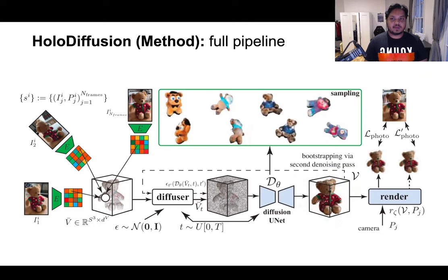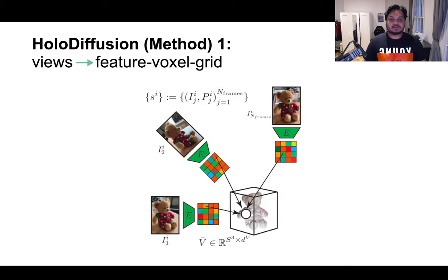Here's the full pipeline of the HoloDiffusion training algorithm. Let's go through this one step at a time. The first step of the HoloDiffusion training setup involves constructing an approximate 3D feature voxel grid using the source views of a randomly sampled scene from the training set. This is done by extracting features for the source views using a learnable encoder E.